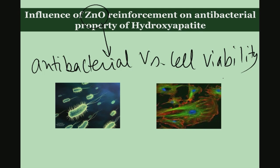Zinc oxide may kill prokaryotic cells, but it may cause toxicity to eukaryotic cells, and therefore eukaryotic cell viability will be disturbed. We will show how zinc oxide content needs to be tailored when developing hydroxyapatite-zinc oxide composites, so that it induces antibacterial property while cell viability is not compromised.